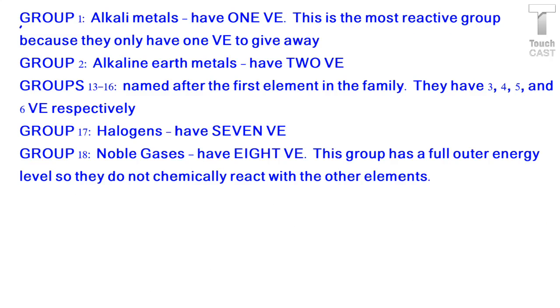So here we just have a list of the groups and all of the names. Again, group 1 has 1 valence electron. Group 2 has 2. Groups 13 through 16, they are named after the first element in their family. And they have 3, 4, 5, and 6 valence electrons respectively. Group 17 has 7 valence electrons. And group 18, the noble gases, have 8 valence electrons. They do not chemically react with the other elements.